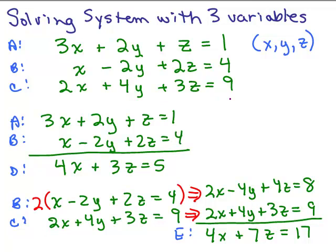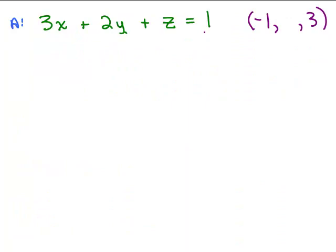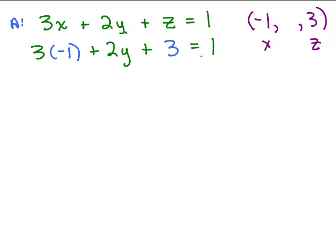Writing down equation A, with X equals negative 1 and Z equals 3, I plug in those values: 3 times negative 1 plus 2Y plus 3 equals 1. That simplifies to negative 3 plus 2Y plus 3 equals 1, which gives me 2Y equals 1. Dividing both sides by 2, Y equals one half.